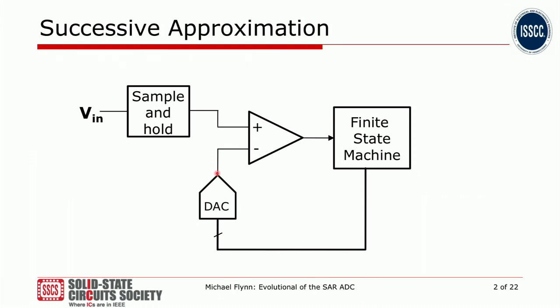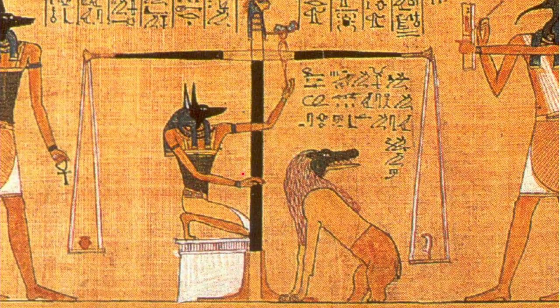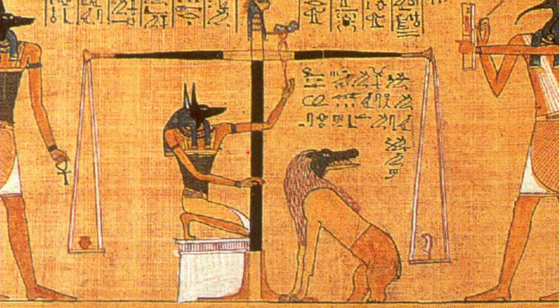The idea of successive approximation is actually a very old one. It actually dates back to the use of balance scales, which have been around for thousands of years. Here's a picture from the Book of the Dead from something like 1000 BCE, and you can see this is an early use of essentially the successive approximation algorithm.